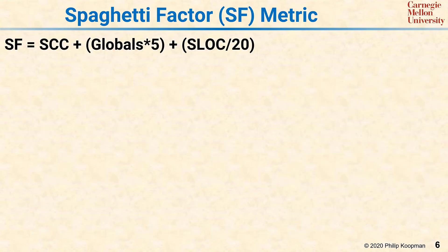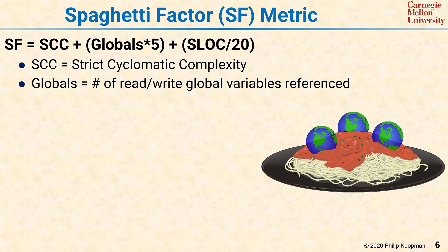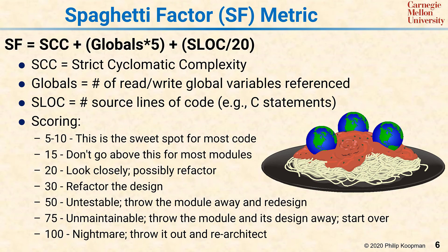Putting together ideas from global variables and cyclomatic complexity, we can create the spaghetti factor metric SF. The spaghetti factor SF equals the strict cyclomatic complexity SCC, plus 5 times the number of global variables, plus the number of lines of source code SLOC divided by 20, where lines of source code are the number of C statements — excluding comments and counting multi-line statements as a single statement. The scoring sweet spot is about 5 to 10. If every procedure has no IF statements or just 1, and your SF is down at 1 or 2, you'll have a lot of tiny subroutines that are hard to keep track of. So having plenty of procedures in the range of 5 to 10 is fine — lower isn't necessarily better.